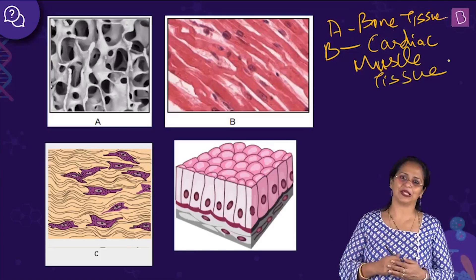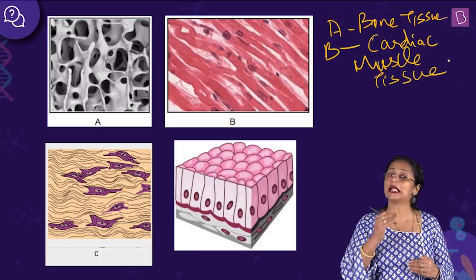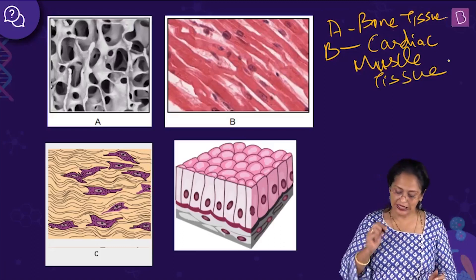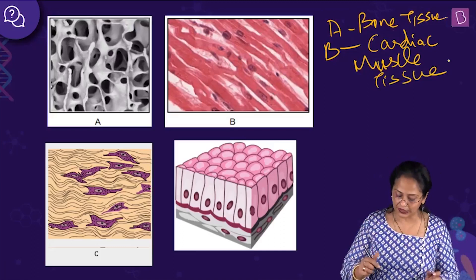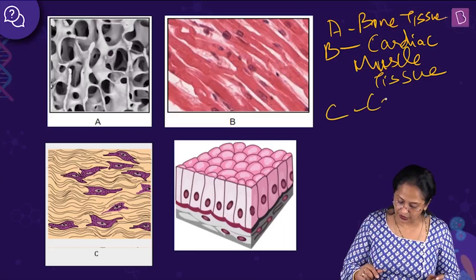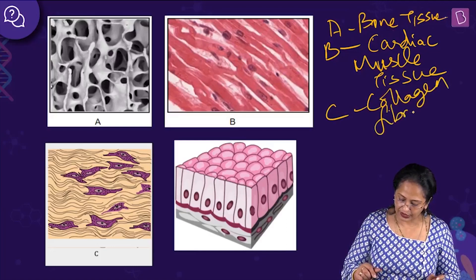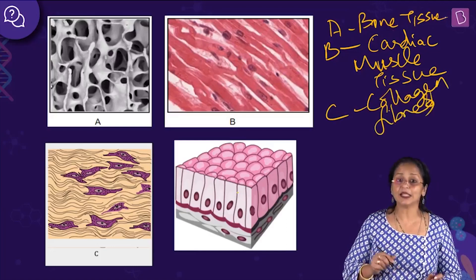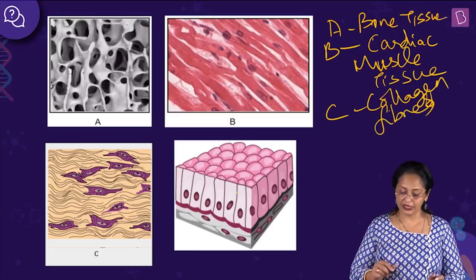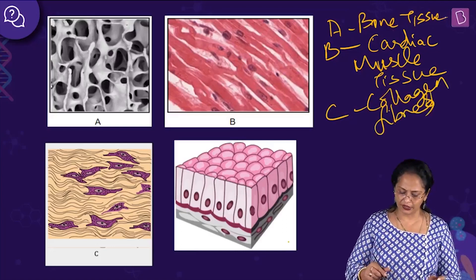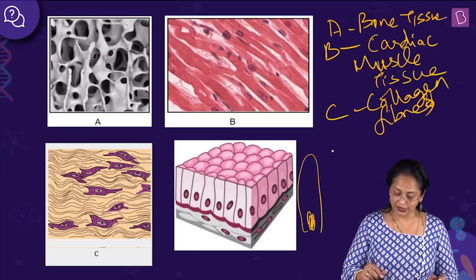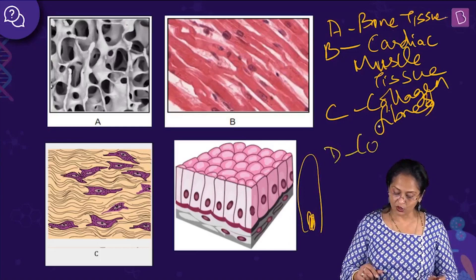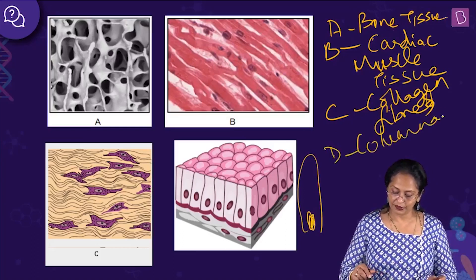Image C shows collagen fibers arranged in a dense regular connective tissue — arranged parallelly. Image D shows cells that are column-like with the nucleus at the base — it is the columnar epithelium.